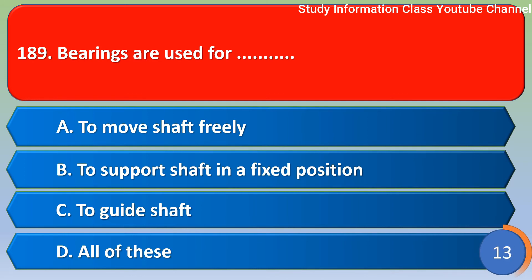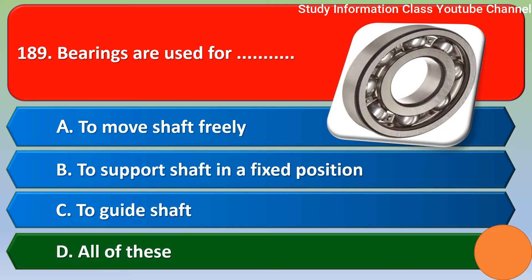Next question: bearings are used for — option A to move shaft freely, option B to support shaft in a fixed position, option C to guide shaft, option D all of these. The correct answer is option D — all of these.